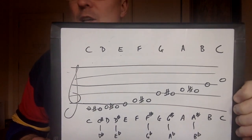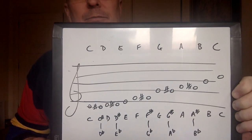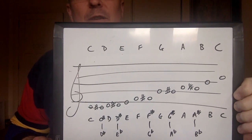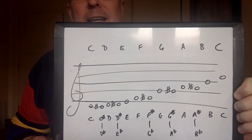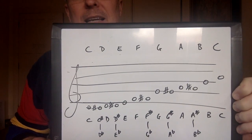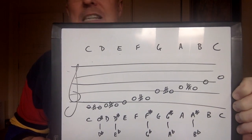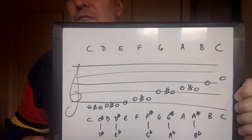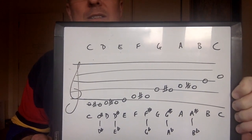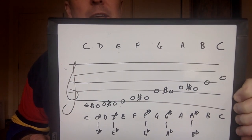You'll notice there's no E sharp, no B sharp, no F flat, and no C flat. They actually do exist, but they're referred to by the underlying name. In basic ukulele playing, a C flat will just be called a B, and an E sharp is just going to be called an F.